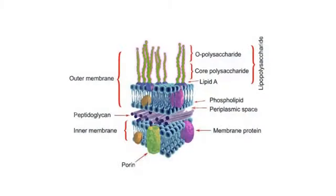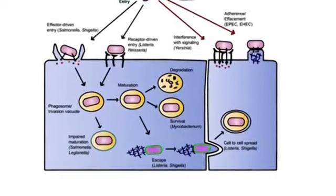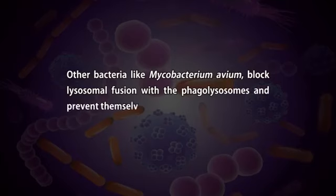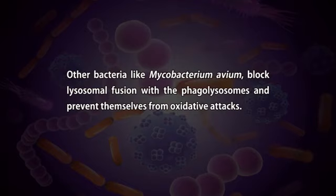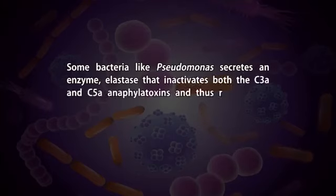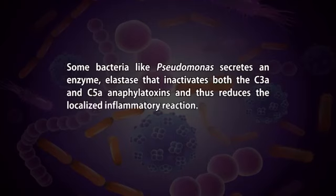Some bacteria have developed mechanisms that interfere with the complement system to survive. For example, some gram-negative bacteria possess long side chains on the lipid A moiety on the cell wall core polysaccharides that help them resist complement-mediated lysis. A number of bacteria escape host defense mechanisms by their ability to survive within phagocytic cells. For example, Listeria monocytogenes escapes to the cytoplasm from the phagolysosome to survive. Other bacteria like Mycobacterium avium block lysosomal fusion with the phagolysosome and prevent themselves from oxidative attack. Some bacteria like Pseudomonas secrete an enzyme, elastase, that inactivates both the C3a and C5a anaphylatoxins, thus reducing the localized inflammatory reaction.